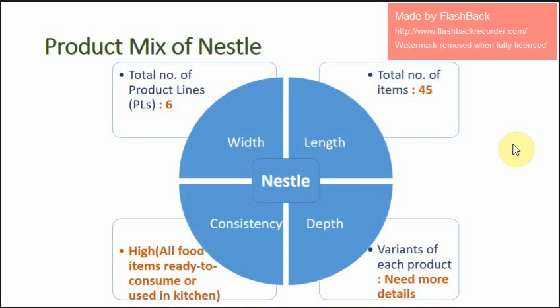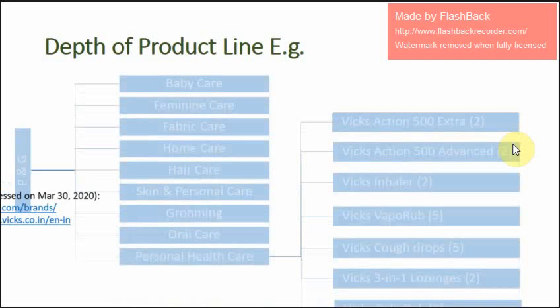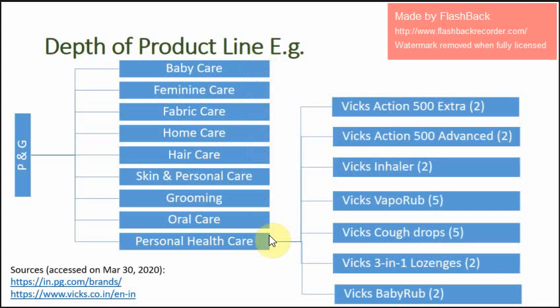To understand the depth of a product line, we will take another example: Procter & Gamble. Procter & Gamble has different product lines, and we are considering one product line — personal healthcare. Within personal healthcare, Procter & Gamble offers one brand called Vicks, offered in seven different kinds of products.